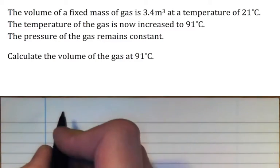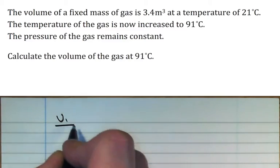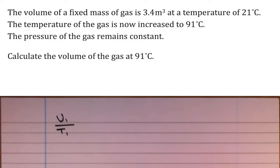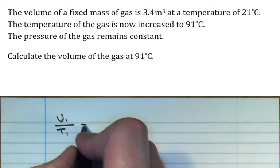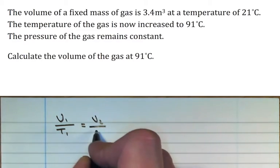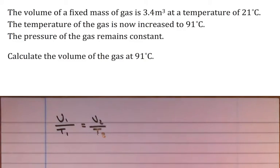Of course, we spoke about the general gas law and how we could actually use that in order to give us three new relationships. And this is the one we'll be using now, which is of course when the pressure is constant. So we've got V1 over T1 is equal to V2 over T2.